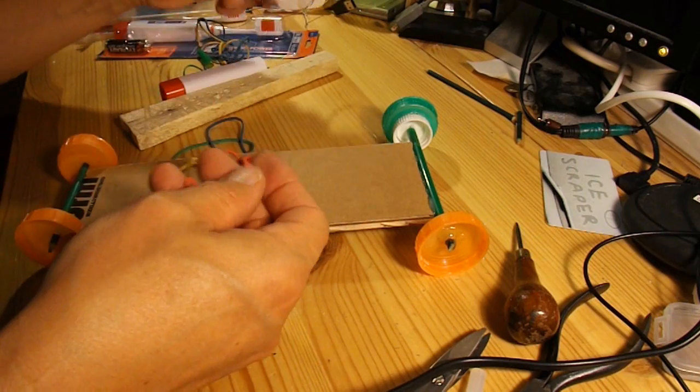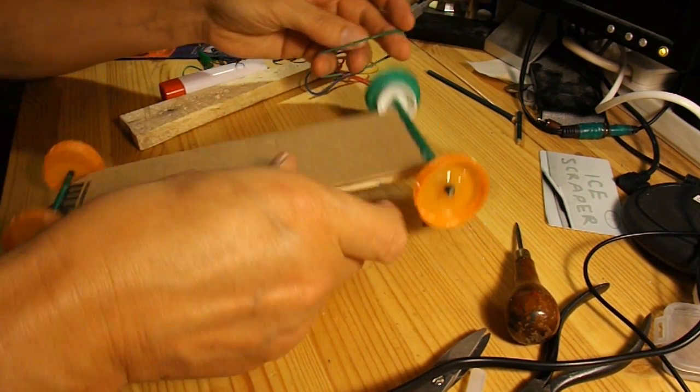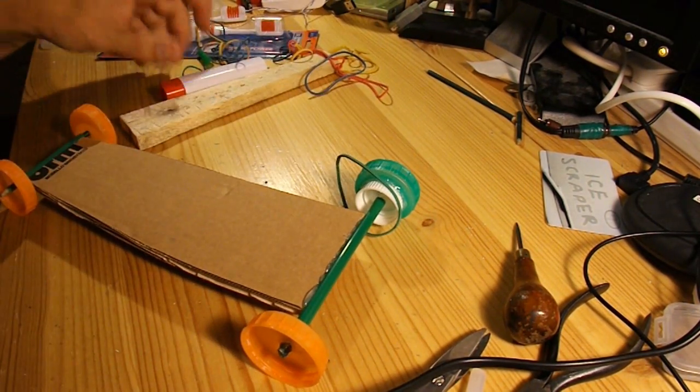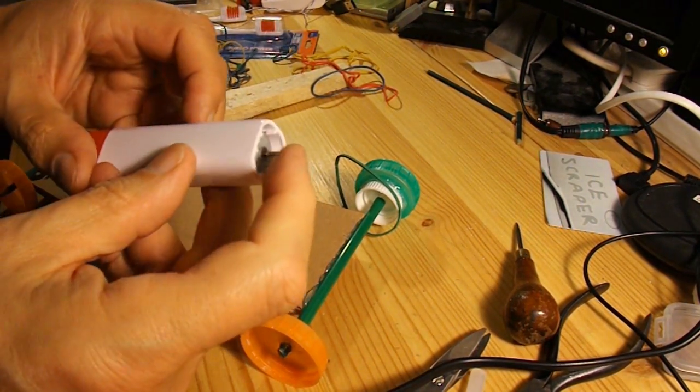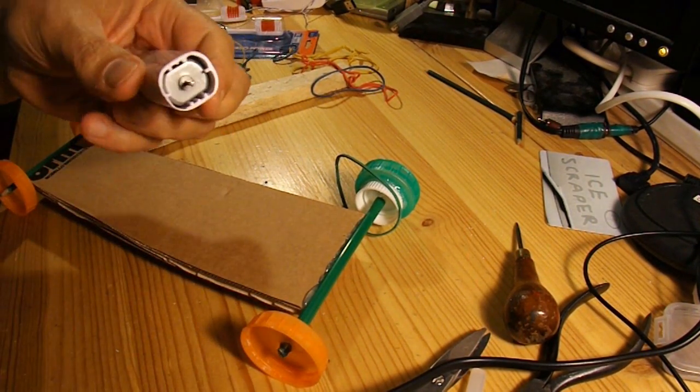Right, rubber band. There's a free one anyway. Put them on there. We need to put a little dollop of hot glue on the end of there to stop the rubber band sliding off.